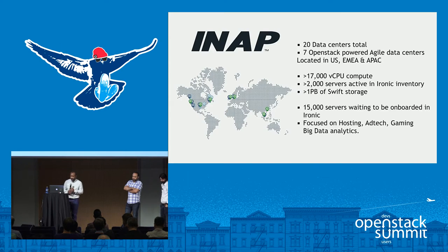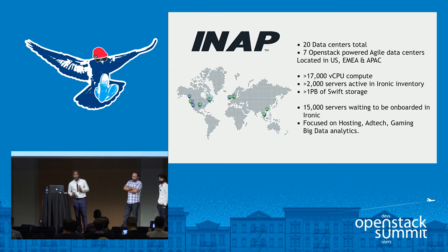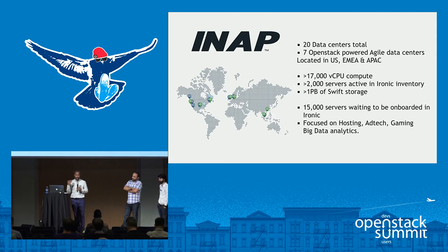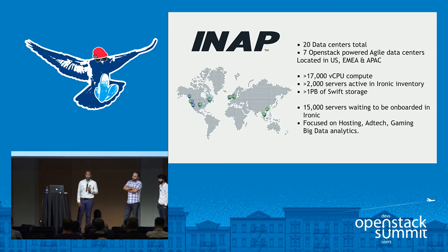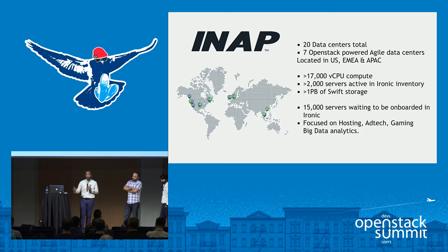INAP is an infrastructure provider available in 20 data centers globally distributed. Out of those 20, we have seven that are OpenStack powered. Last year at the Tokyo Summit, we launched our bare metal service off Ironic, which we have brought to seven different locations in the US, EMEA, and APAC. We have roughly about 20,000 cores available and 2,000 servers currently active under Ironic, providing all sorts of services, plus a petabyte of storage. We also have 15,000 servers still waiting to be onboarded into Ironic.